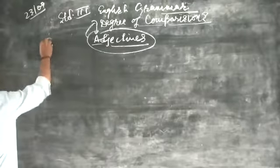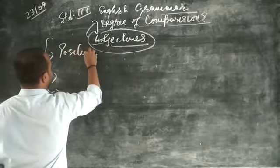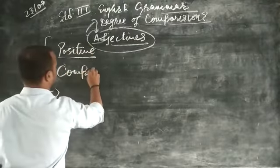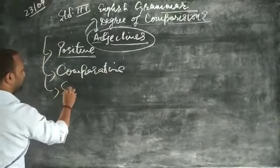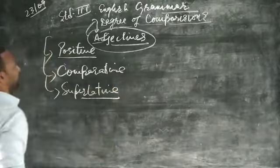Degree of comparison has been classified into 3 types. First one is positive. Second is comparative. And third one is superlative.